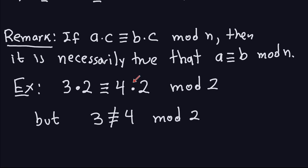So cancellation doesn't simply work for congruence. Congruence acts like equality, but you have to be careful when cancelling on both sides — there is some extra property that must hold. That's an introduction to congruence. We needed this because we will use the congruence symbol later in the RSA encryption algorithm. I'll stop the video here and see you in the next one.